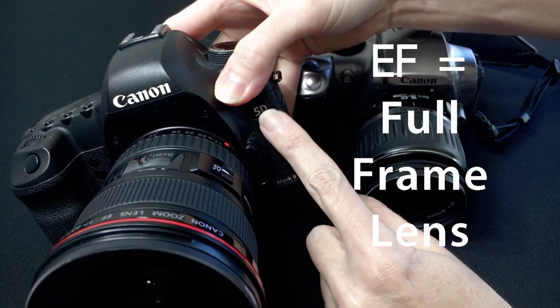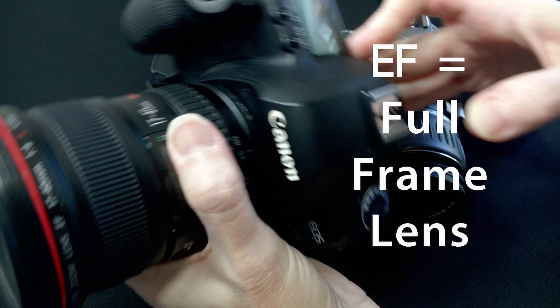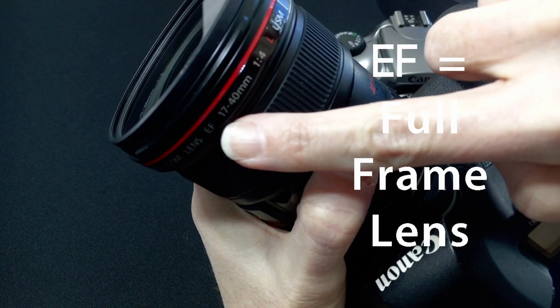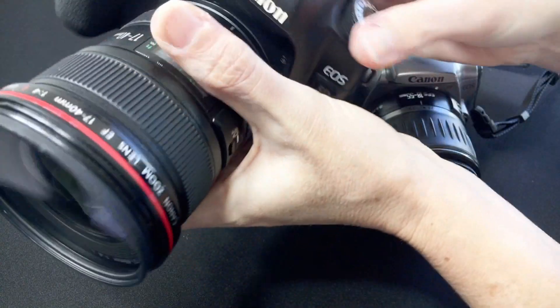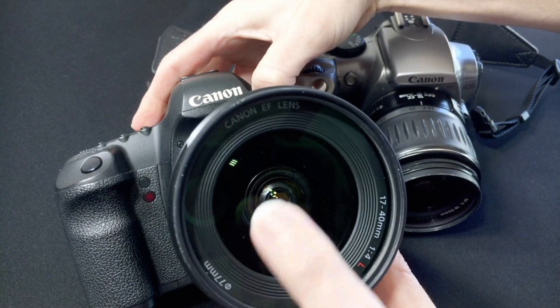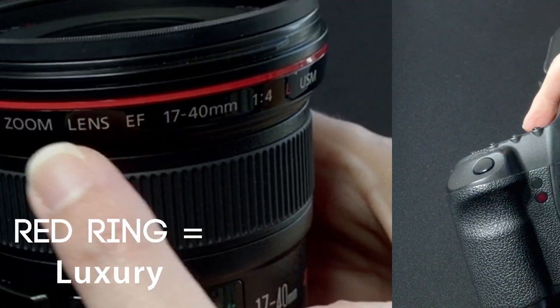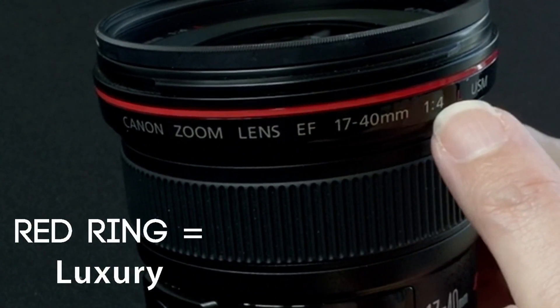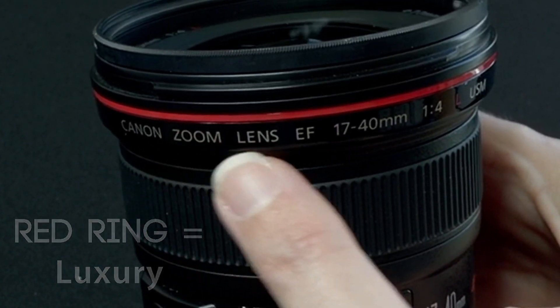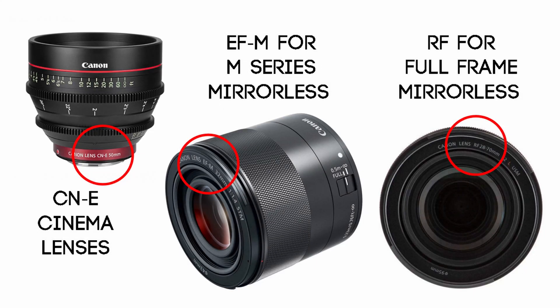EF lenses are designed for full frame cameras. Full frame lenses are considered more professional, have better build quality, and are therefore usually more expensive. The L, or luxury, lenses are the cream of the crop and have a red band of color around the barrel. Other lens types include CNE, which are specialty cinematography lenses; EF-M lenses for the M series mirrorless camera system; and RF lenses for the full frame mirrorless camera bodies.